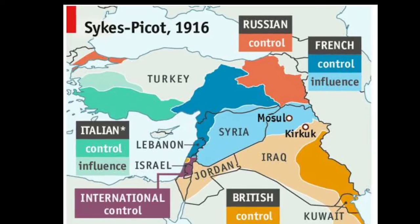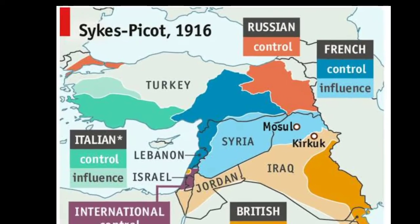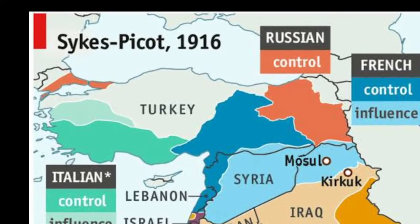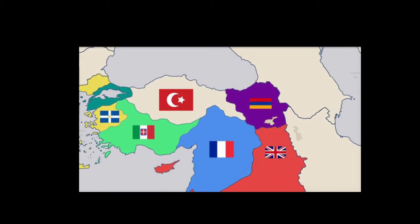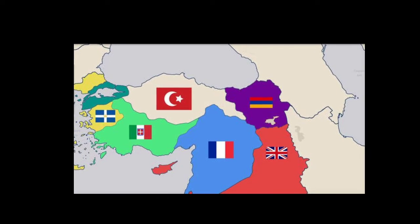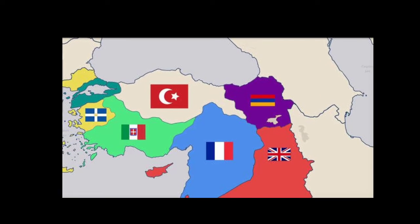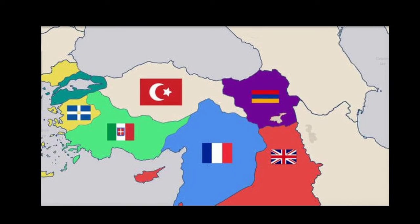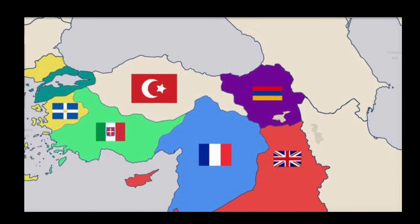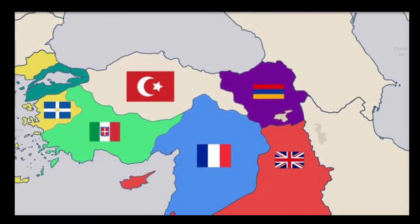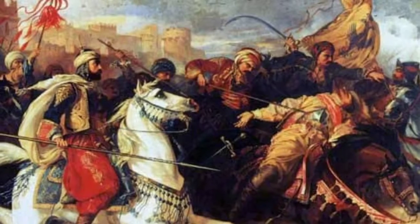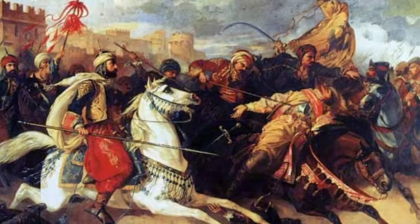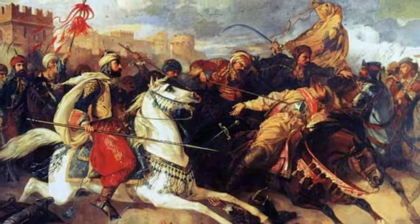After the Ottoman Empire had joined Germany to form the Ottoman-German Alliance, the huge conglomeration of territories and peoples that formerly comprised the Ottoman Empire was divided into several new states. The Ottoman Empire had been the leading Islamic state in geopolitical, cultural, and ideological terms.